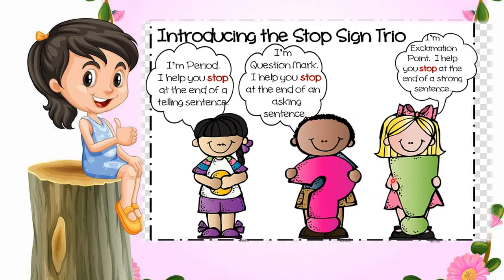Next we have exclamation mark. This symbol is called exclamation mark. I am exclamation point — I help you stop at the end of a strong sentence. So this is another type of sentence. This exclamation mark is used with an exclamation sentence, which we have not learned in the previous lesson. Let's know more about exclamation and exclamation point in the next slide.